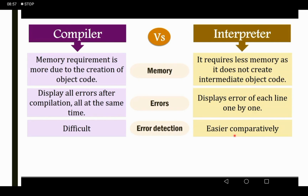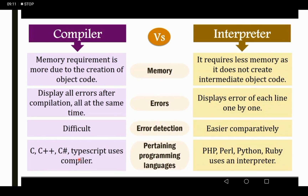Regarding error detection: in the compiler, it is difficult to detect errors. In the interpreter, it is easier to detect errors compared to the compiler. Some examples of compiler-based languages are C and C++, while PHP and Python are examples of interpreter-based languages.